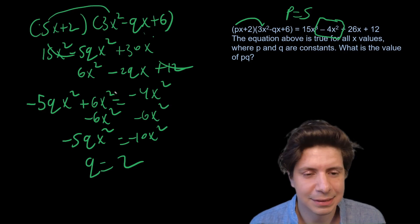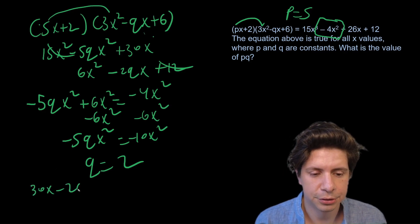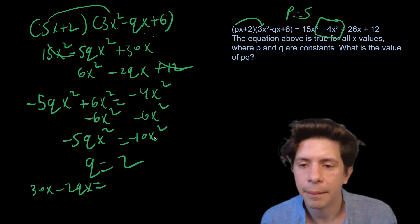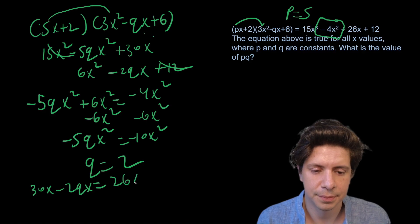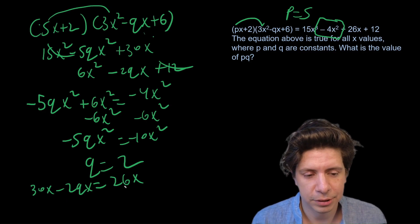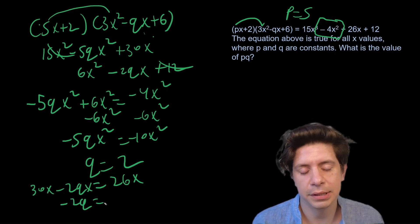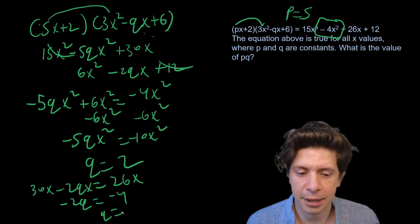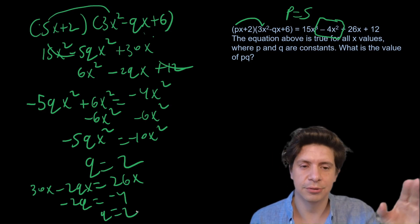If you did it with the x's it would also work. We could do 30x - 2qx equals 26x. Let's forget about the x's. -2q equals... -4, q equals 2.